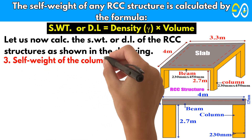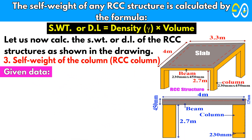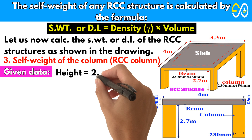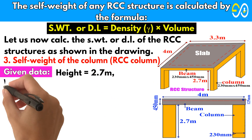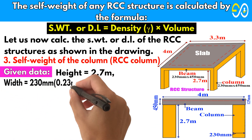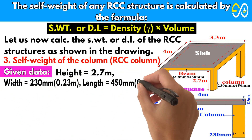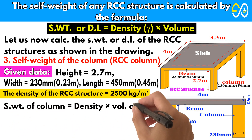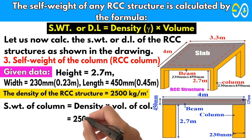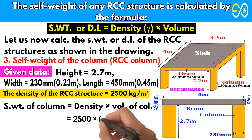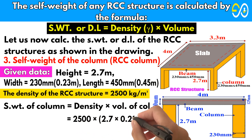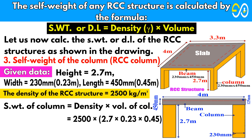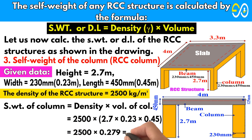Self-weight of the column. Given data: height equals 2.7 meters, width equals 230 millimeters, length equals 450 millimeters. Self-weight of the column equals density times volume of the column: 2500 times 2.7 times 0.23 times 0.45 equals 2500 times 0.279 equals 698.63 kilograms.